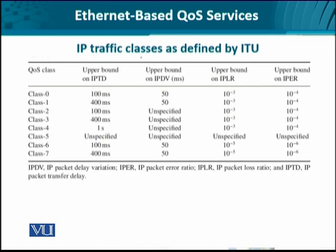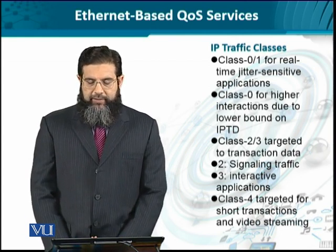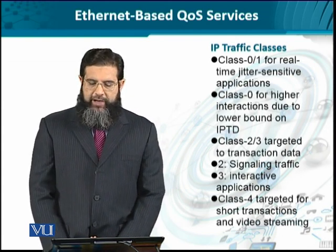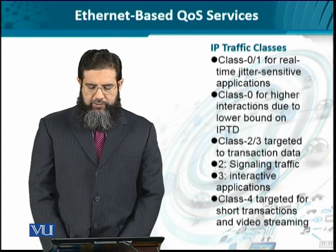This is a recap of the IP traffic classes defined by the ITU. For class 0, the upper limitation on delay variation is not more than 100 milliseconds, the transfer delay is not more than 100 milliseconds, the delay variation is not more than 50 milliseconds, and the packet loss ratio is not more than 10 to the power minus 3 — meaning no more than one packet in a thousand can go in error. The packet loss and packet error ratios are again very stringent. Class 0 and 1 are for real-time jitter-sensitive applications, which is the most crucial kind of multimedia traffic over NGN. Class 2 and 3 are for signaling and interactive traffic, and class 4 is for video streaming.